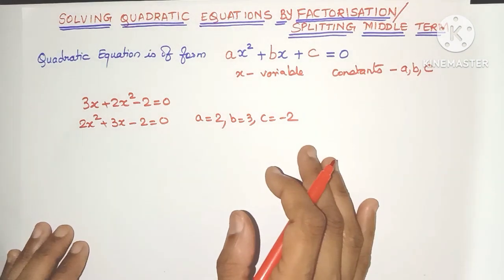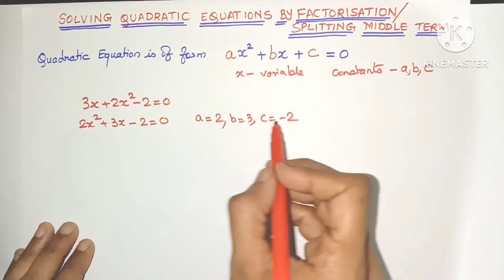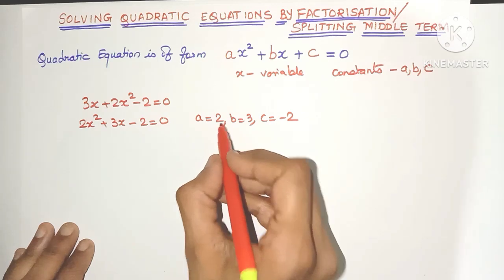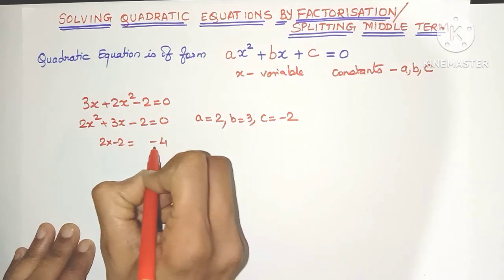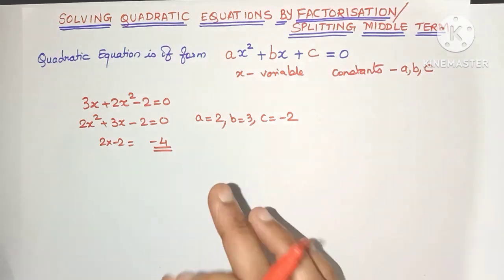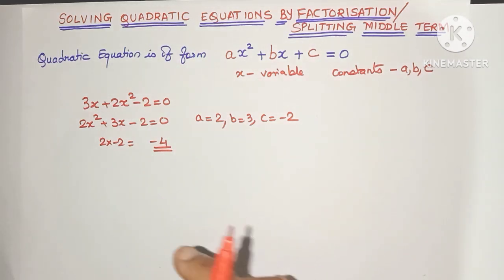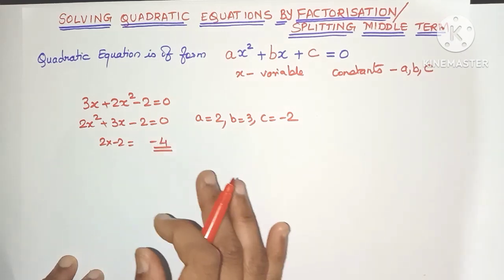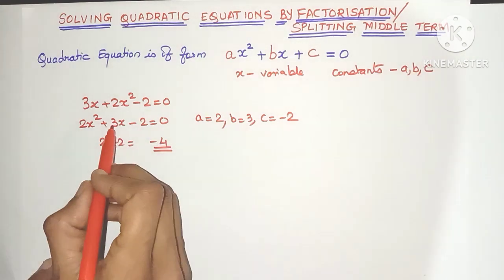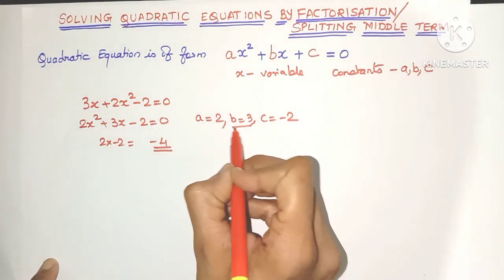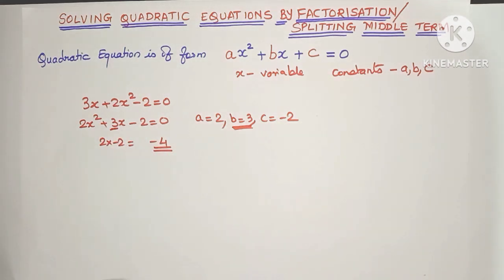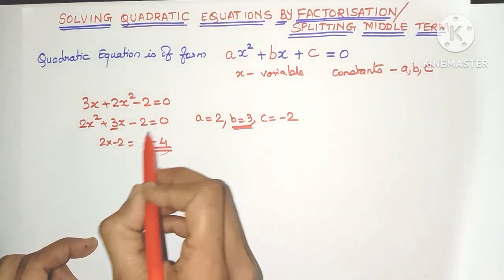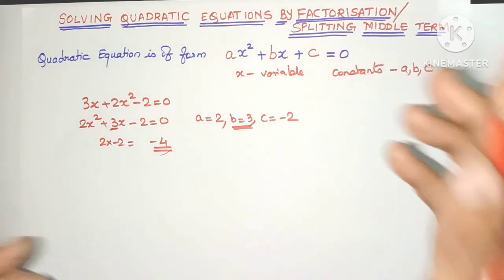In the factorization method, first we find the product of a and c. So a into c is 2 into minus 2 which is minus 4. We have to find those two factors of minus 4 which when added will give us the middle term b, which is 3. This is called the factorization method because we are finding the factors of minus 4.